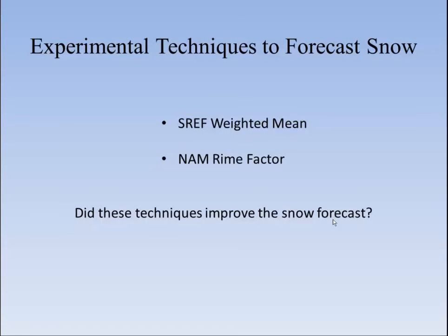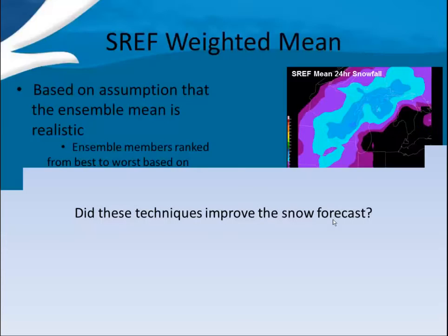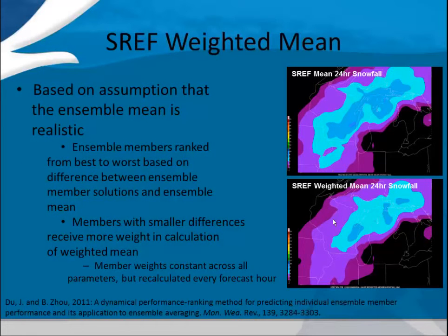What we looked at were primarily two experimental techniques: the SRF weighted mean, and what was called the RIME factor. We would try to verify if this actually provided any improvement. The SRF weighted mean basically ranks the best to worst and looks at differences between the ensemble members. The members with the smallest differences were given more weight as opposed to the outliers.